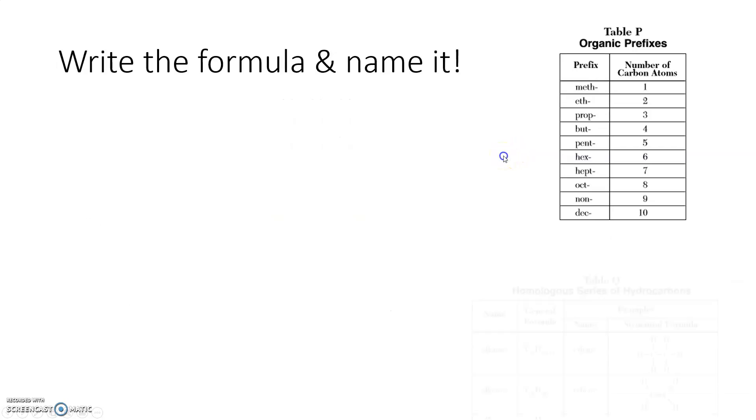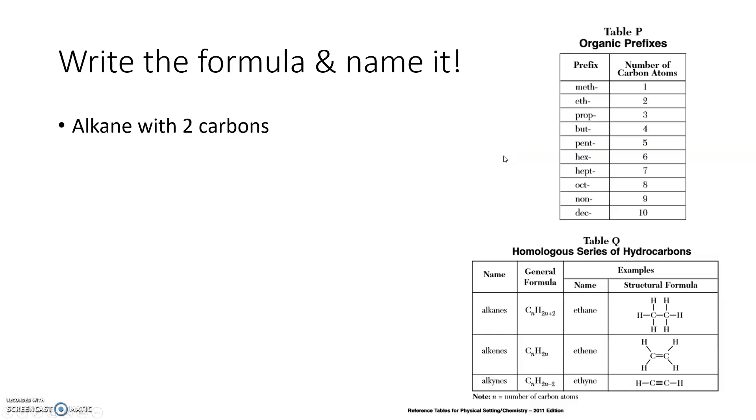Let's try a few more. If I take a look at this next one here, I want to give the name and the formula for an alkane with two carbons. So the first thing I want to do is find out the prefix for two carbons. Come over here, the prefix for two carbons is eth. The ending for that will be whatever an alkane's ending is, A-N-E. So I know his name is ethane.